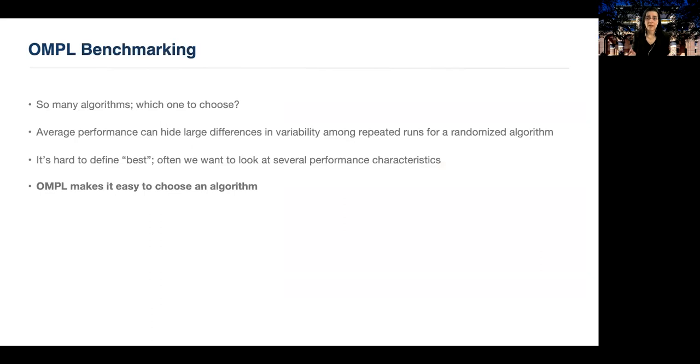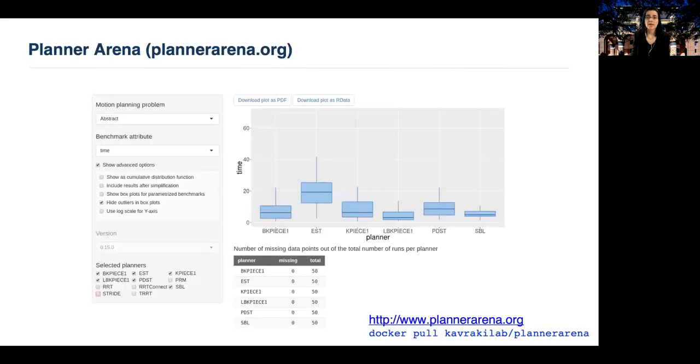Which one to use if you are in need of a good motion planning algorithm? Well, it's very hard to define best for these classes of algorithms. Often we want to look at several performance characteristics. And OMPL makes this easy. The idea is as follows: repeatedly solve the same problem with a desired list of planning algorithms, collect all kinds of performance measurements and store them in a database, visualize and interactively create plots that aggregate this data. Then decide what to use.